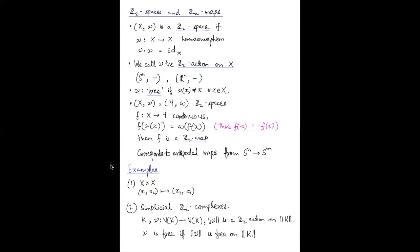Let's look at a few examples of Z2 spaces. If you have any topological space X, you can give a Z2 action to X × X that just exchanges its coordinates: (x1, x2) gets mapped to (x2, x1). You can naturally extend the definitions of Z2 spaces and Z2 actions to simplicial complexes. If K is a simplicial complex and ν is a map from its vertex set to itself, we say ν is a Z2 action on K if its induced affine map is a Z2 action on the polyhedron of K, and ν is free if its induced affine map is free.